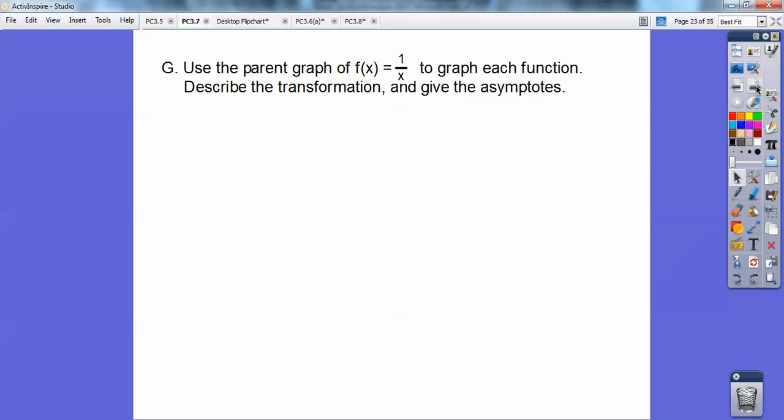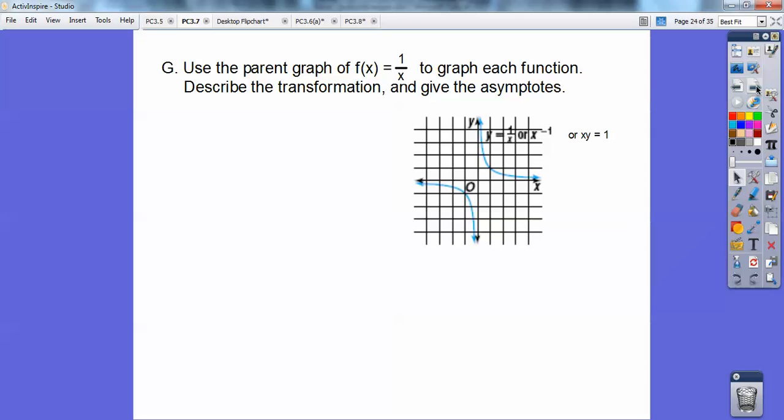So use the parent graph of f of x is 1 over x to graph each function and describe the transformations and give an asymptote. We've already graphed y equals 1 over x before, and it gave us this graph right here. Notice the vertical asymptote is x equals 0 because you can't have 0 in the denominator. And the horizontal is y equals 0. We'll discuss that one in the next lesson, but this is y equals 0 also. So we're going to use this graph, y equals 1 over x, and we're going to translate some stuff.